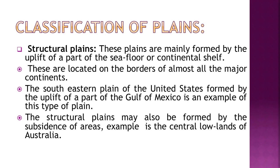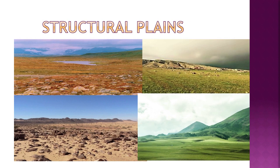There are three types of plains. First are structural plains, mainly formed by the uplift of a part of the seafloor or continental shelf, located on the borders of almost all major continents. The southeastern plain of the United States, formed by the uplift of a part of the Gulf of Mexico, is an example. Structural plains may also be formed by the subsidence of an area — for example, the central lowlands of Australia.